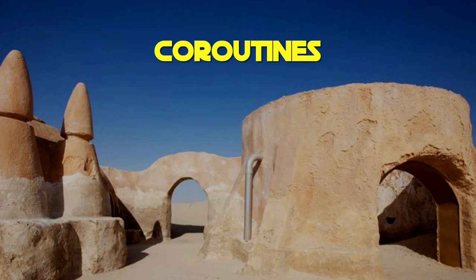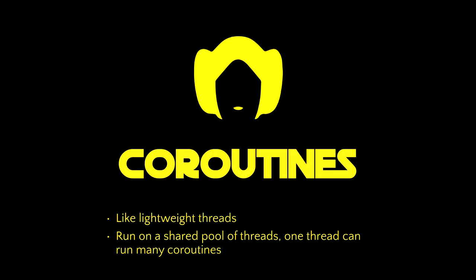The concept of coroutines isn't a new one. It's been around since the 1960s and many programming languages have their own implementation of coroutines. However, coroutines are new to Kotlin. But what are coroutines? It's really helpful to think of coroutines as lightweight threads, where many coroutines can run on a shared pool of threads, and one such thread can run many coroutines.